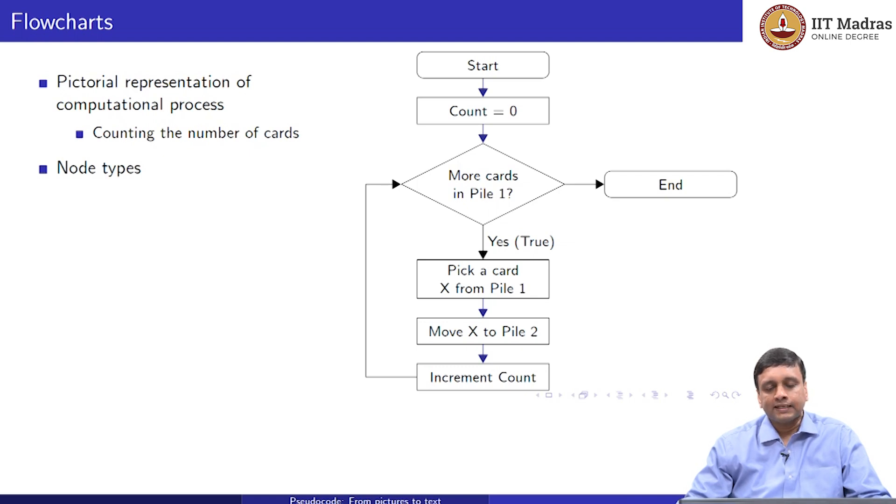So this flowchart has many different nodes or diagram elements in it. We have these nodes where something actually happens, where computation happens, where the count is initialized to 0, or we pick up a card, or we move it to pile 2, or we increment it. And these are called process nodes, and they are drawn as these rectangles with sharp corners.